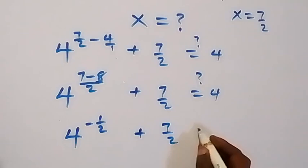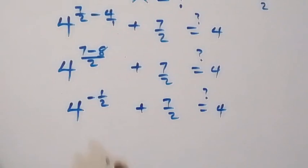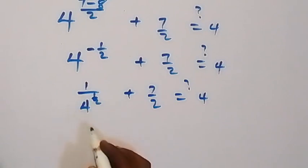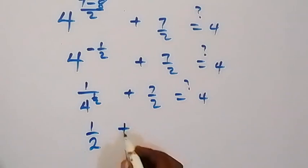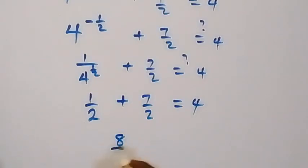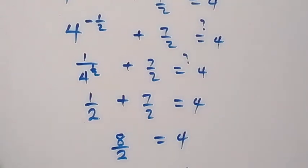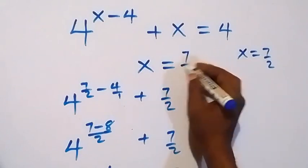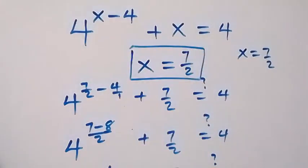Plus 7 over 2, is this equal to 4? From the negative power rule, this can be written as 1 over 4 raised to power half, plus 7 over 2, equals 4. Now 4 raised to power half is the square root of 4, which is 2. So we have 1 over 2 plus 7 over 2, which gives us 8 over 2, and 8 over 2 is 4. Left hand side equals right hand side, so the value x equals 7 over 2 is valid.